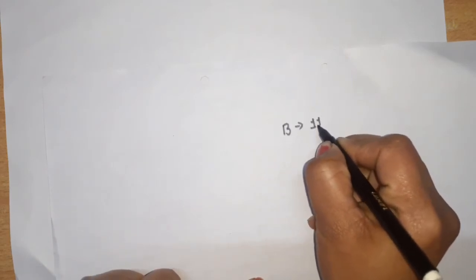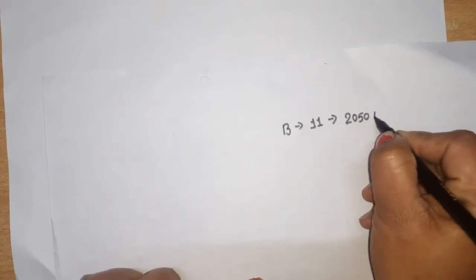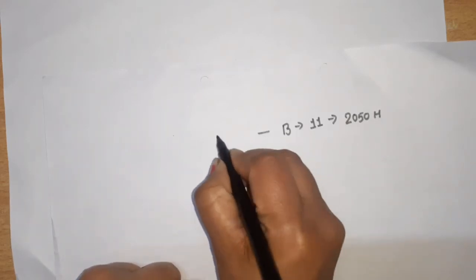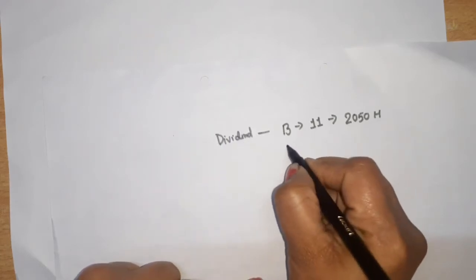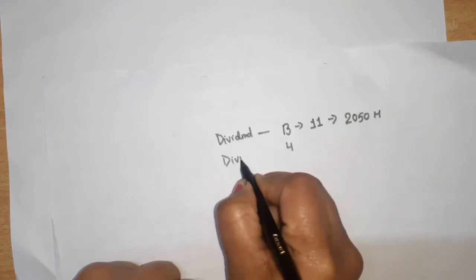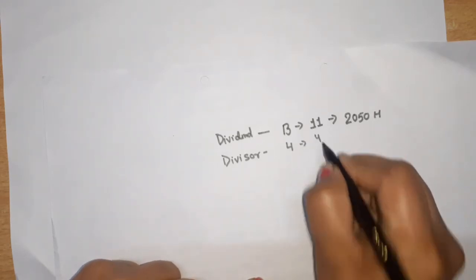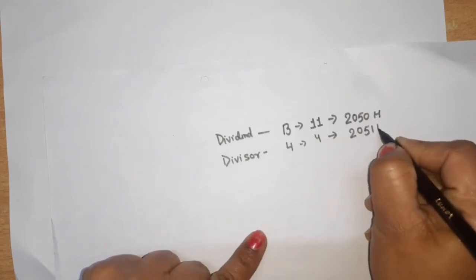Suppose we have two numbers. The first number is 0B in hexadecimal, which means 11 in decimal. This is stored at memory location 2050H — this is the dividend. The second number is the divisor, which is 04 hex (4 in decimal), stored at location 2051H.